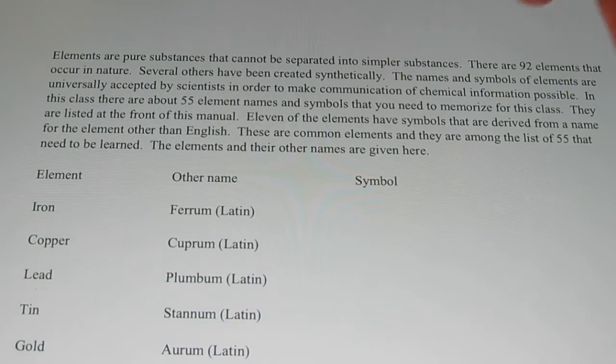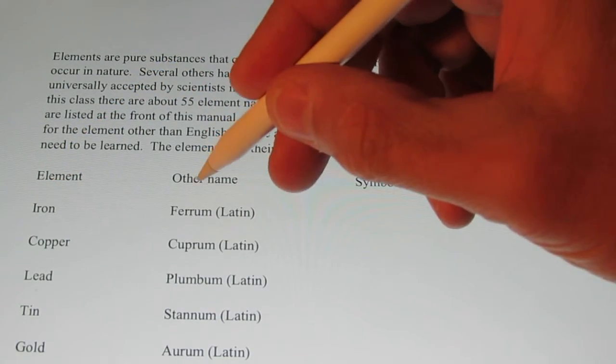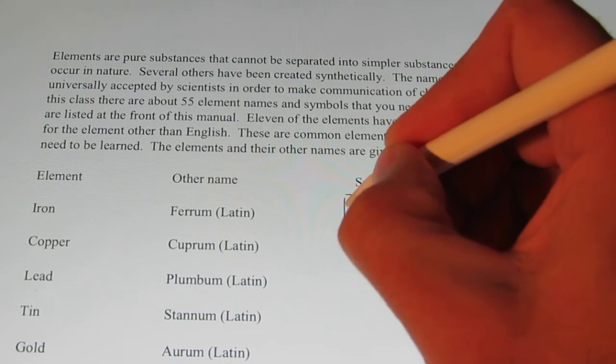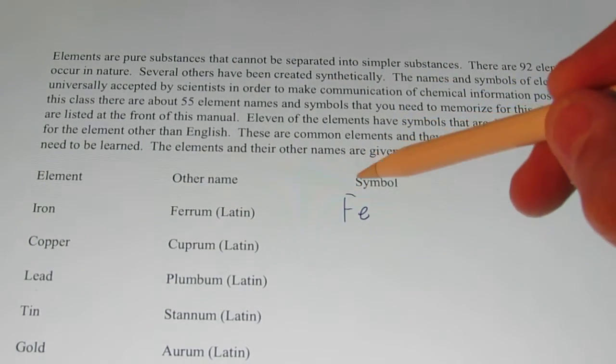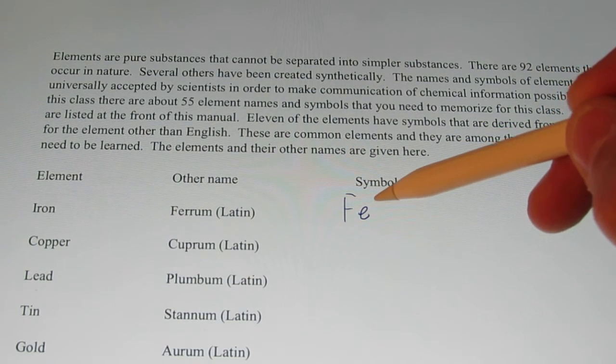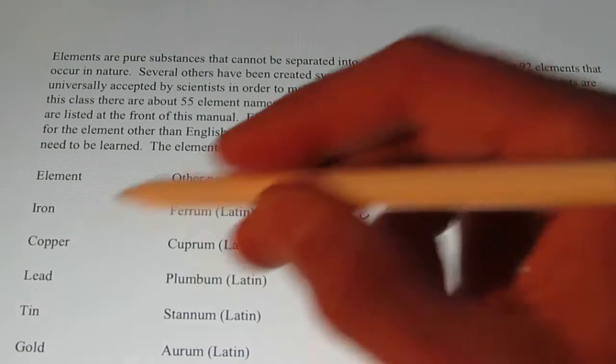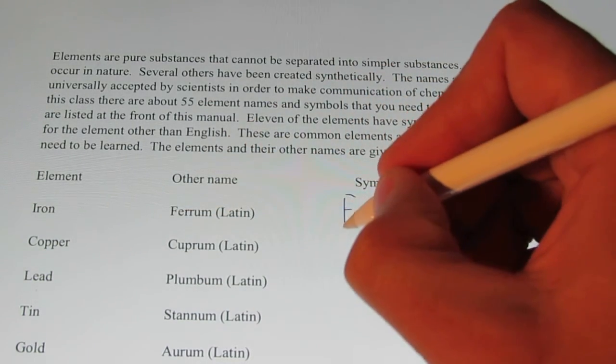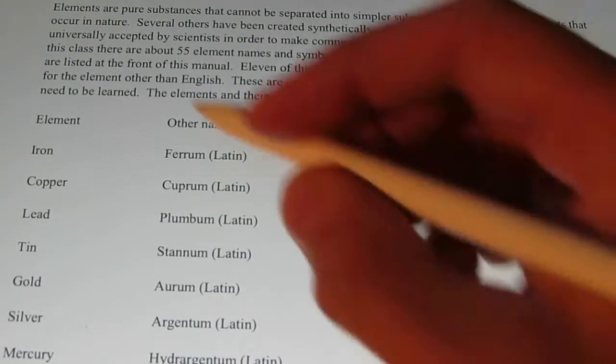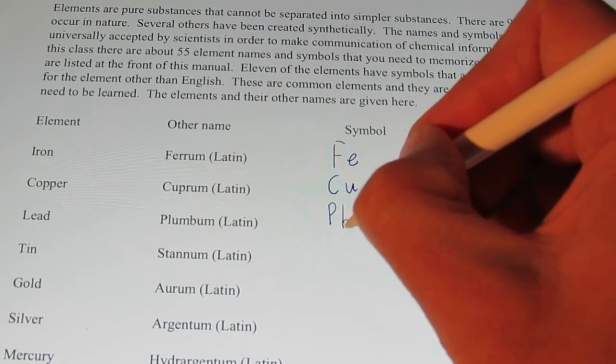So, for instance, the element iron, the symbol comes from the Latin name for iron, ferrum. So the symbol is F-E. You'll notice that the first letter is always uppercase, and the second letter, if there is one in the element symbol, is always a lowercase letter. Copper comes from the Latin name cuprum. Its symbol is C-U. Lead, plumbum, is the Latin name. Its symbol is P-B.